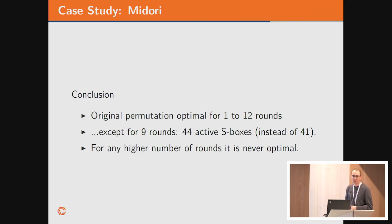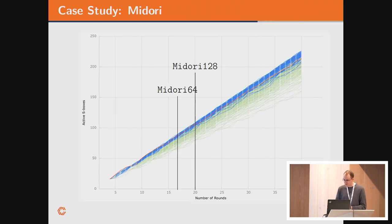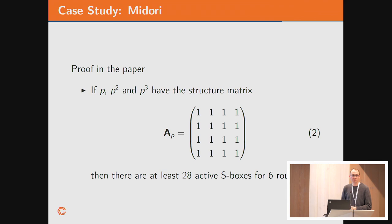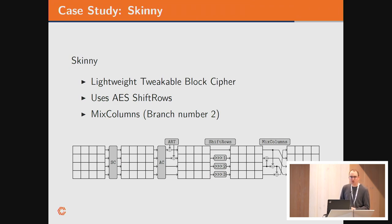The main conclusion from this is: the original permutation is actually optimal up to 12 rounds, except for 9 rounds which seems an outlier here. But for any higher number of rounds, it is never optimal. When you look at the picture, you will see there are a lot of blue permutations on top of the red permutation. But it's also mostly outside the number of rounds of Midori, so maybe it doesn't matter too much in this case. It's also quite interesting, there's not a single permutation which really stands out here. A lot of the permutations are better for some rounds. So it really depends on what parameters you use, which permutation actually is the optimal one. We also show a nice proof in the paper, which gives you an easy to check condition on your permutation. If your permutation P, P squared and P cubed all have the all-one structure matrix, then you'll get at least 28 active S-boxes over six rounds.